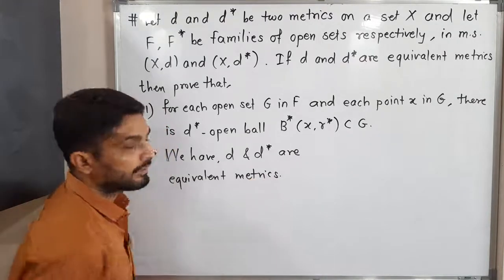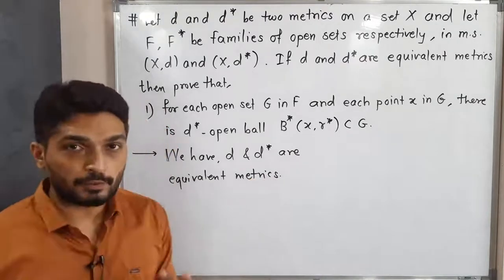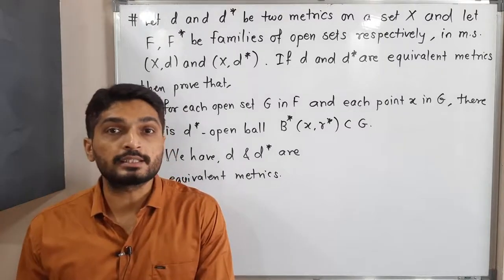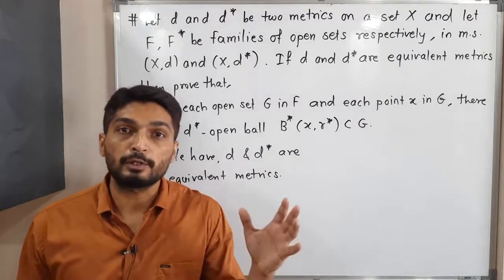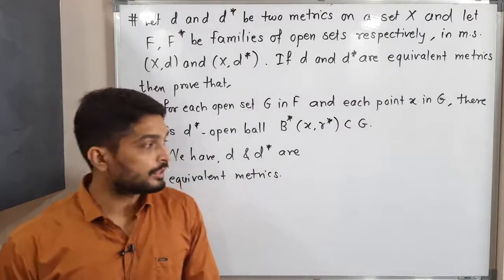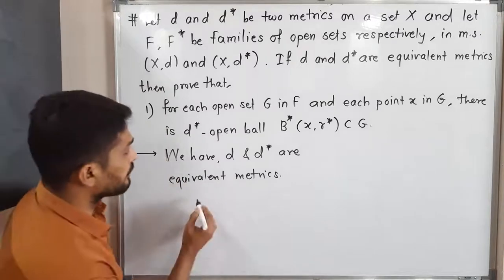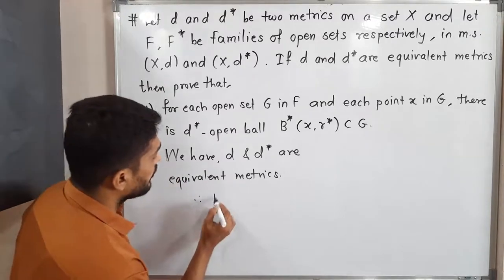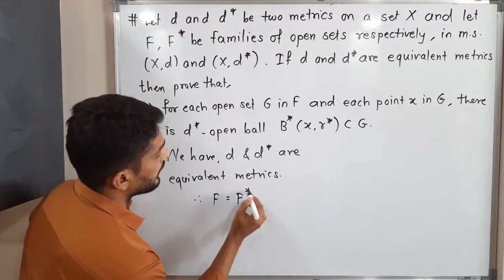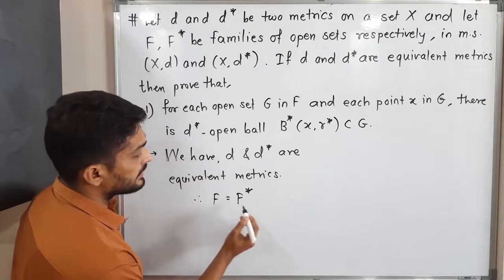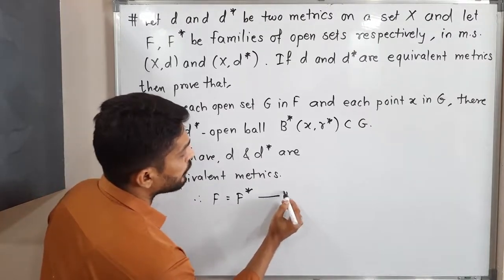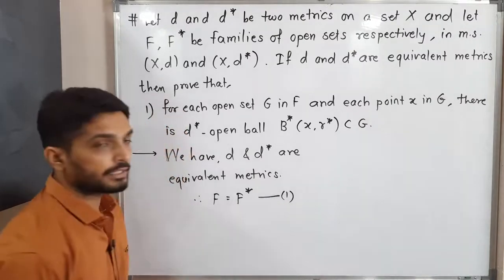You know that when two metrics are equivalent, then we say the family of D open sets is equal to the family of D star open sets. So here D and D star are equivalent metrics, so therefore we have F is equal to F star. That means the family of D open sets equals the family of D star open sets. I'm calling it equation one.